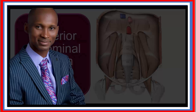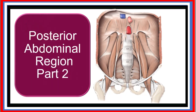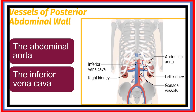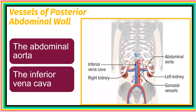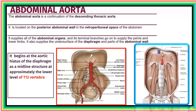This is part two in our series of lectures on the posterior abdominal region. In this section we'll be discussing the vessels and nerves of the posterior abdominal region. The first vessel we'll be considering is the major vessel of the abdomen — the abdominal aorta — and then the inferior vena cava.